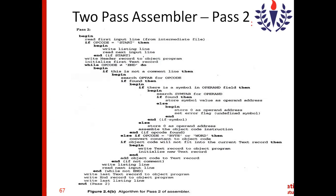That is the end of the inner IF block. If there is no symbol in the operand field at all, it goes to the else part, storing 0 as the operand address. If there is no operand in the instruction at all, it puts 0 — but this is not an error, since there is simply nothing there.